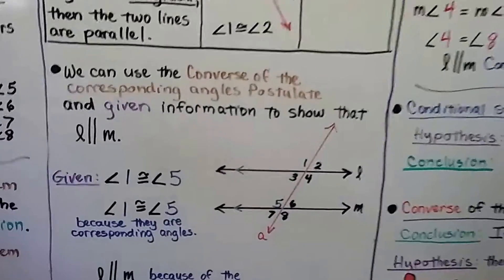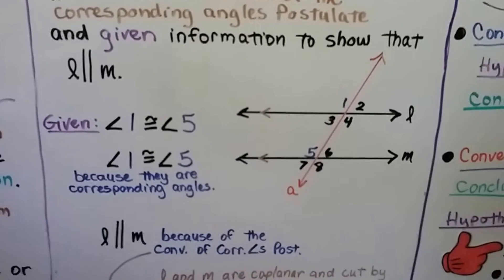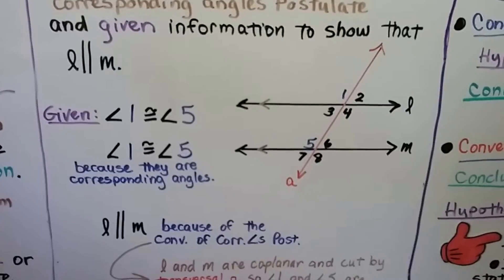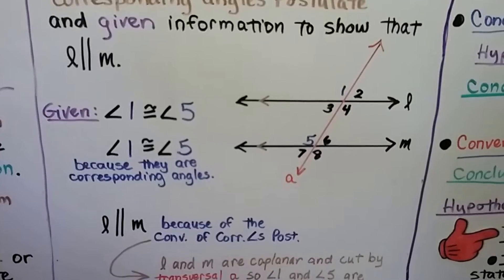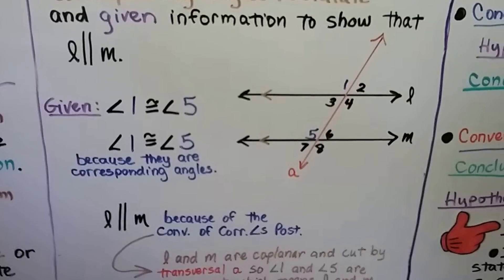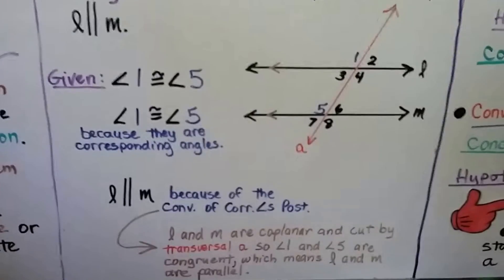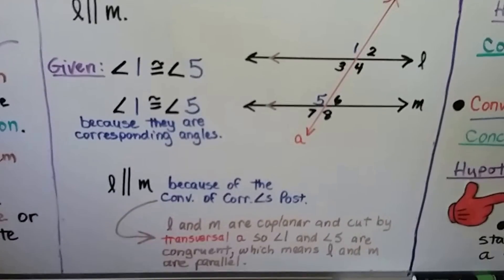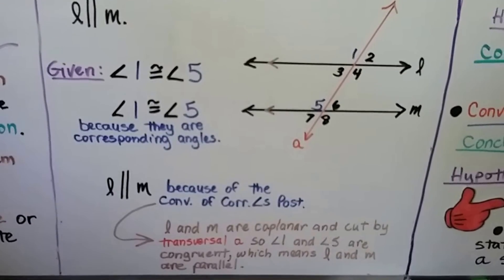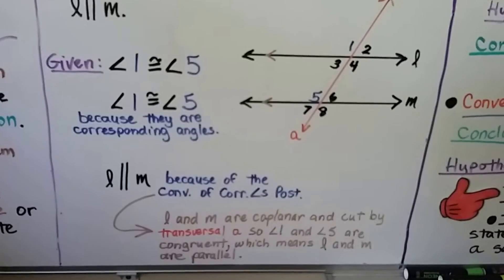We can use the Converse of the Corresponding Angles Postulate and given information to show that L is parallel to M. Looking at our diagram, we've got line L and line M, and line A as our red transversal. It's given that angle 1 is congruent to angle 5. Angle 1 and angle 5 are corresponding angles — both on the same side of the transversal and both above their lines. Therefore, L is parallel to M because of the Converse of the Corresponding Angles Postulate. L and M are coplanar and cut by transversal A, so angle 1 and angle 5 are congruent, which means L and M are parallel.